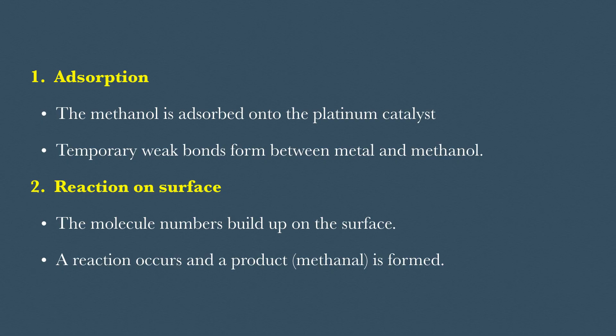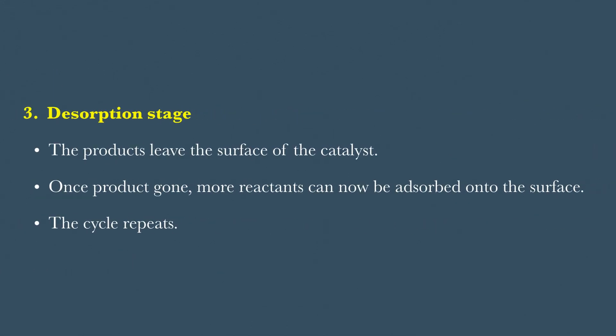Step 2 reaction on the surface and a product is formed. Step 3 desorption. The methanol leaves the catalyst surface and once gone more reactants can come and be absorbed onto the surface and the cycle can repeat.